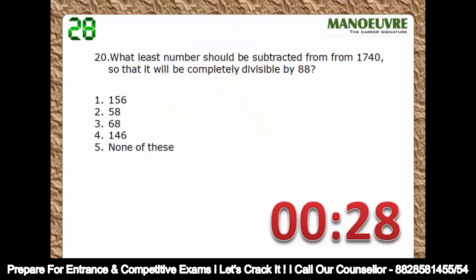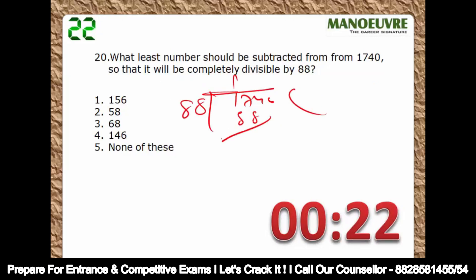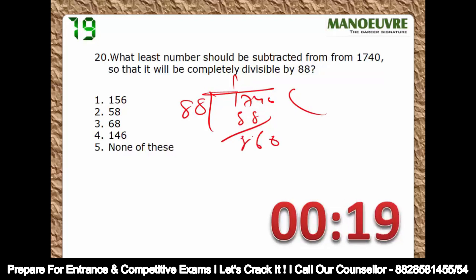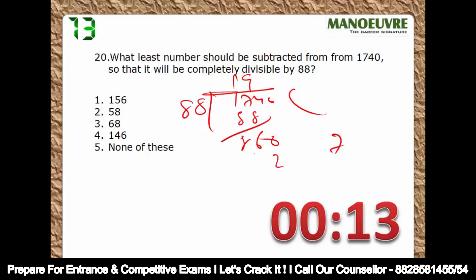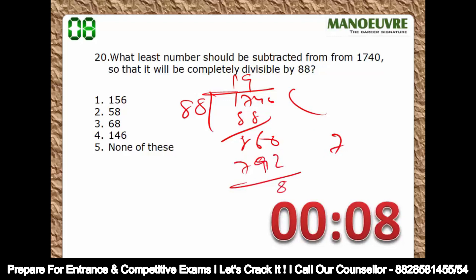What least number should be subtracted from 175 so that it is completely divisible by 88? This is the division part. 1 × 88 = 88, remainder is 87 — nothing but 6. Then 8 × 9 = 72, carrying: 79, 8 × 9 = 72, giving 79 again. This simplifies to 8 and 6, giving 68. So 30 is the answer.